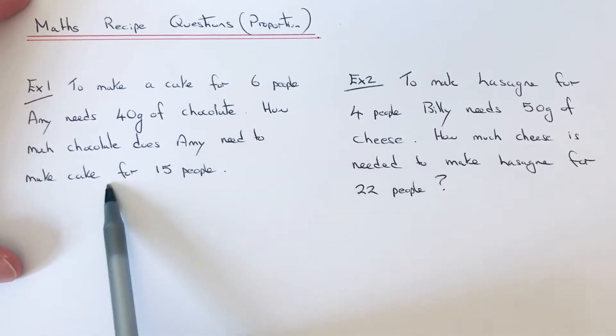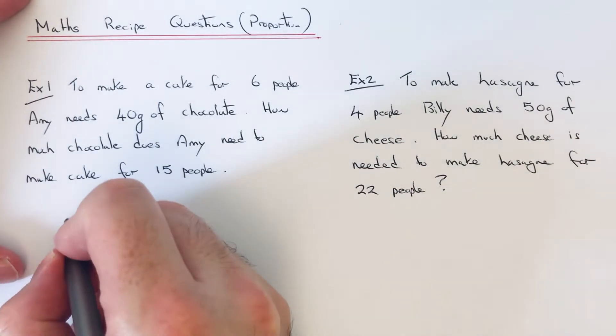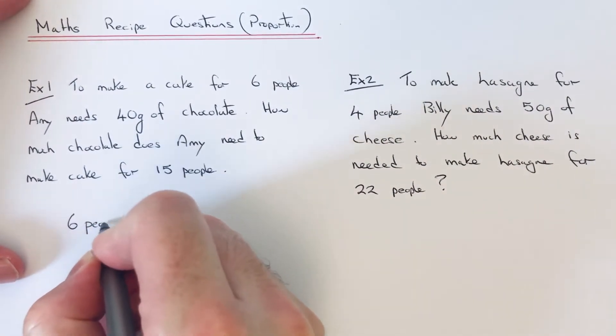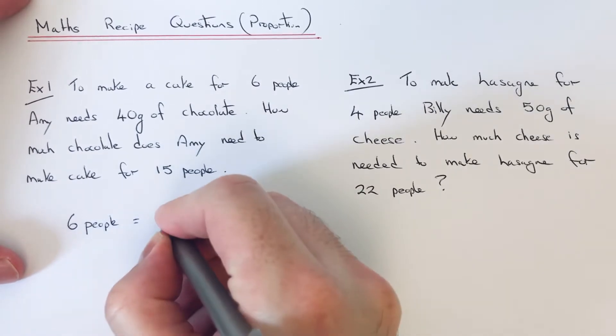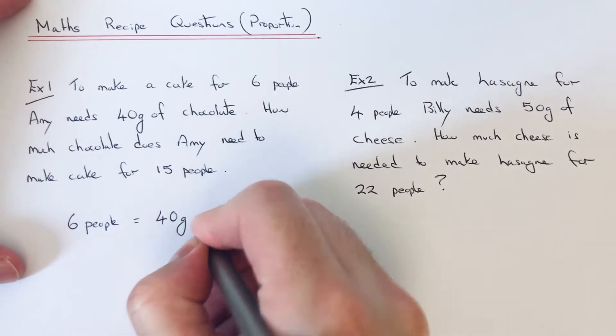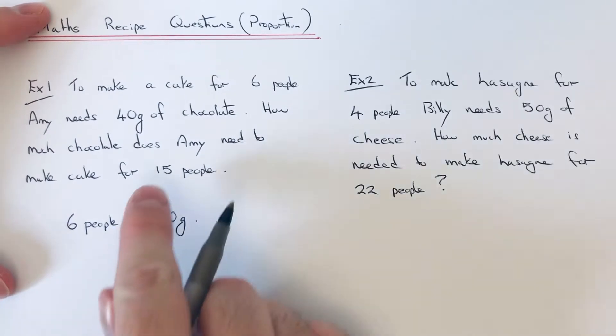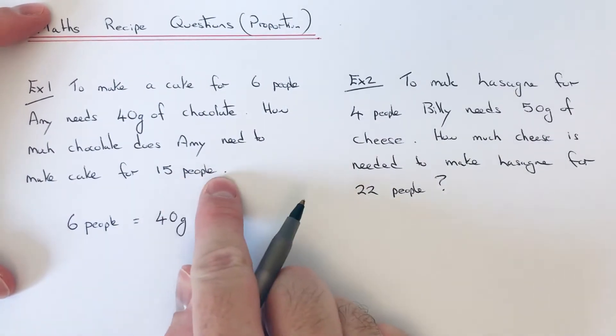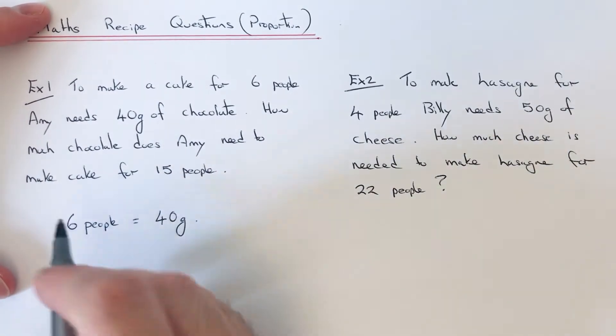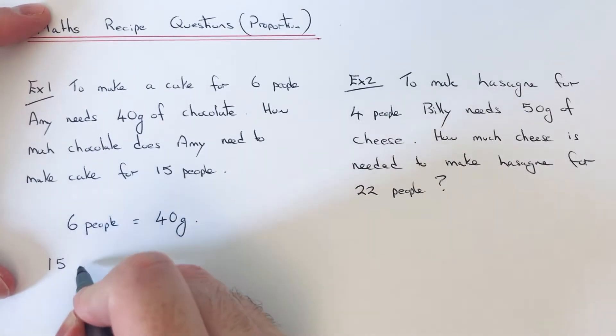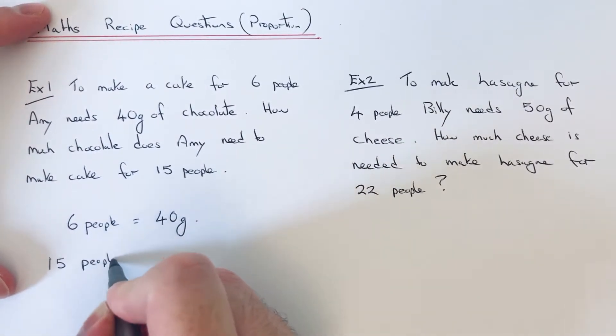So the first thing I'm going to do is say 6 people equals 40 grams of chocolate, okay? And what we've got to do is work out how much chocolate is needed for 15 people. So if I write the 15 people underneath, we just need to figure out what the chocolate is.